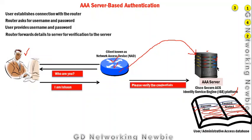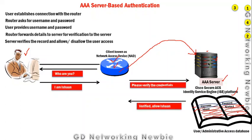This AAA server can be deployed using Cisco Secure ACS or the Identity Services Engine (ISE) platform. These are services that can be implemented as a Triple-A server. When the server checks the credentials and finds a matching record — for example for user Ishan — it instructs the router to allow that user to access the IOS.